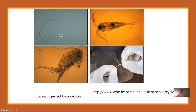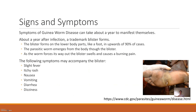Here we have the guinea worm with its spiral shape. This is the Cyclops it's carried in — you can see there's a little guinea worm inside the Cyclops. Here it's emerging. Health workers will wrap it around a stick to get it to come out. The trademark symptom of guinea worm disease is that blister. It takes up to a year for these symptoms to manifest and generally occurs on your lower extremities, like a foot.